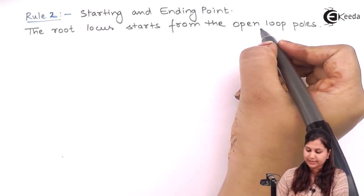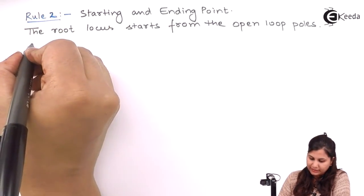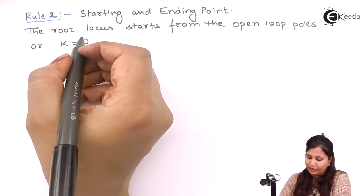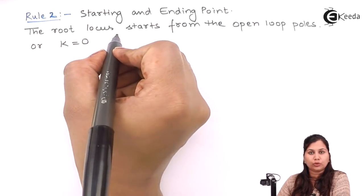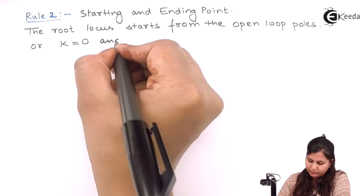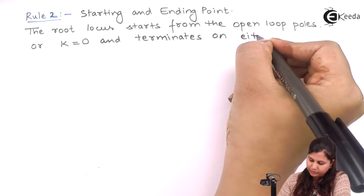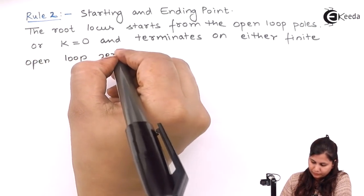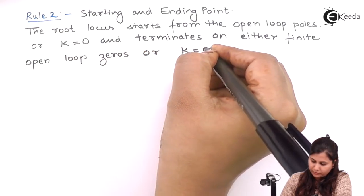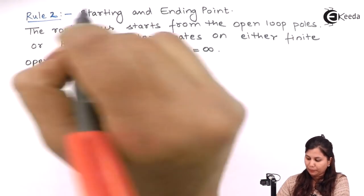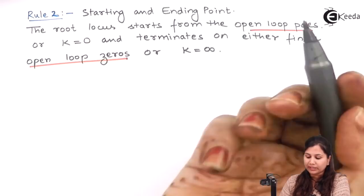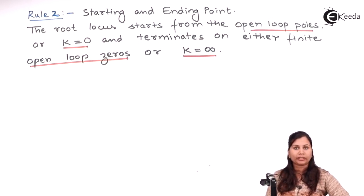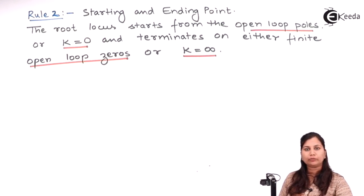The root locus starts from the open loop poles, which we can also say is at K equals zero — that is, when the gain K is zero. It terminates on either the finite open loop zeros or at K equals infinity. So remember: root locus starts from a pole (K=0) and terminates at a zero (K=∞).